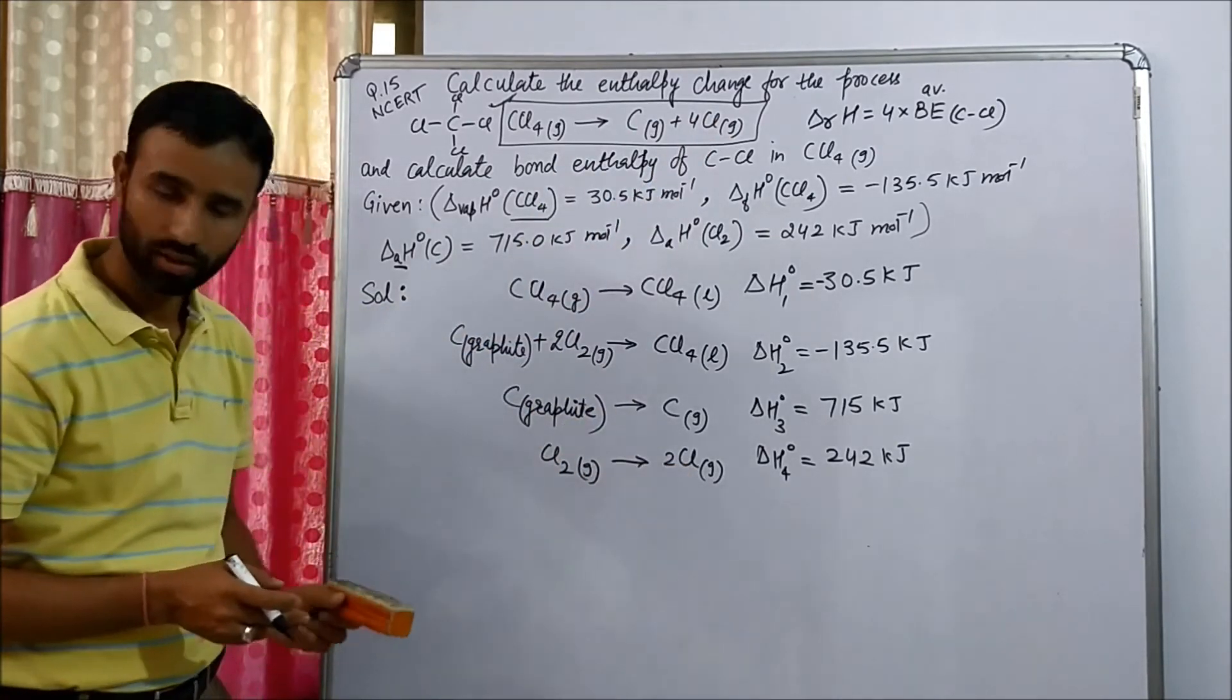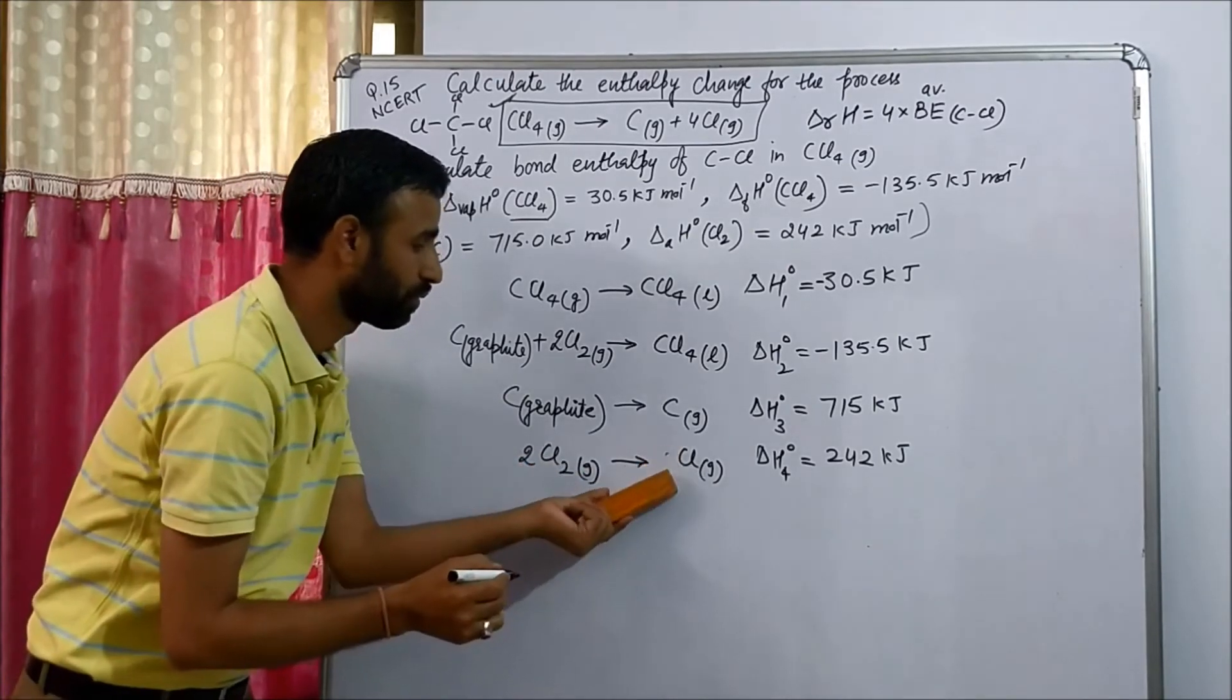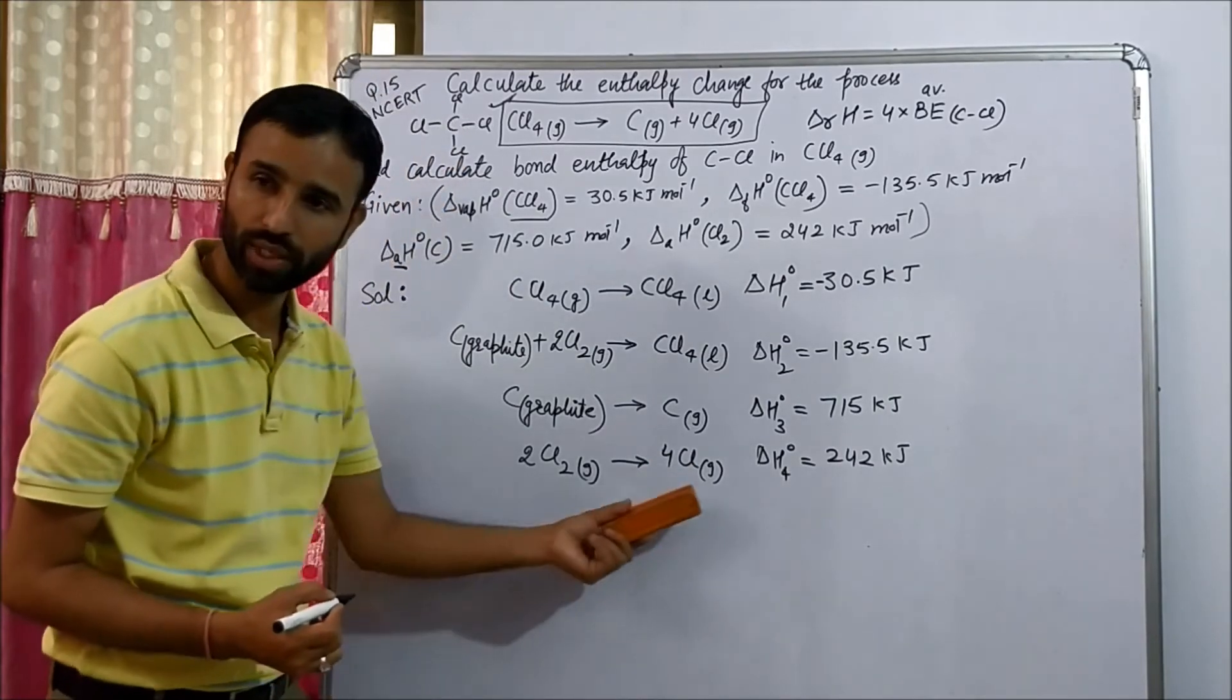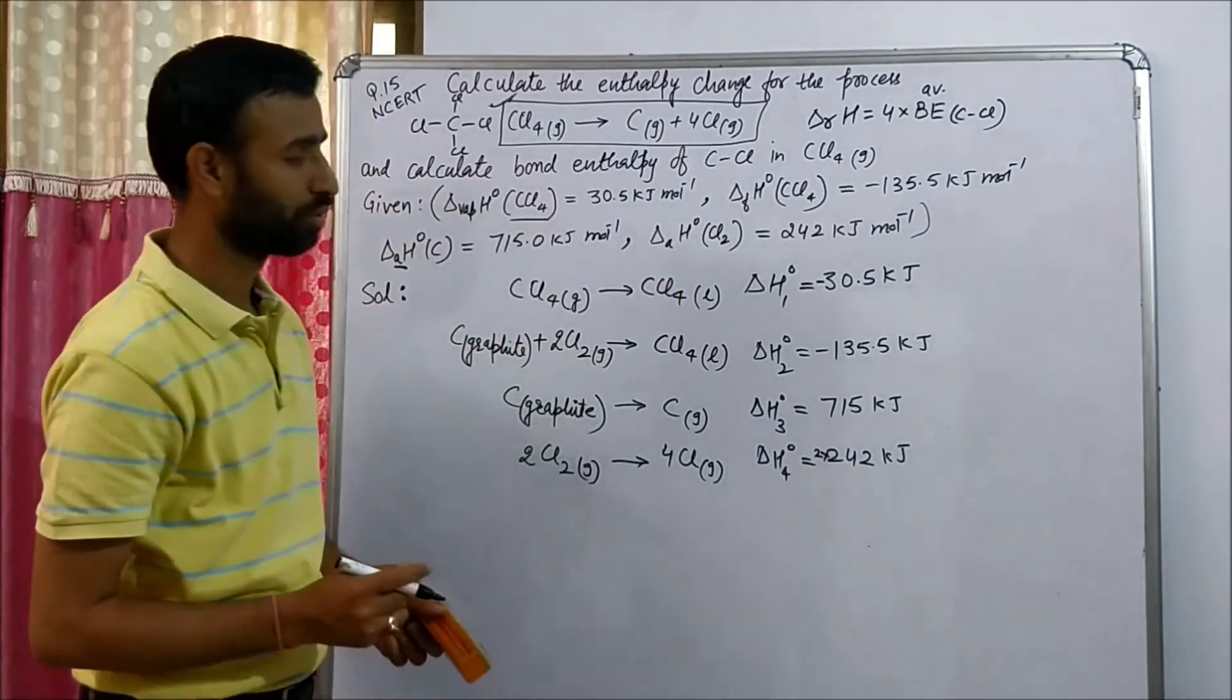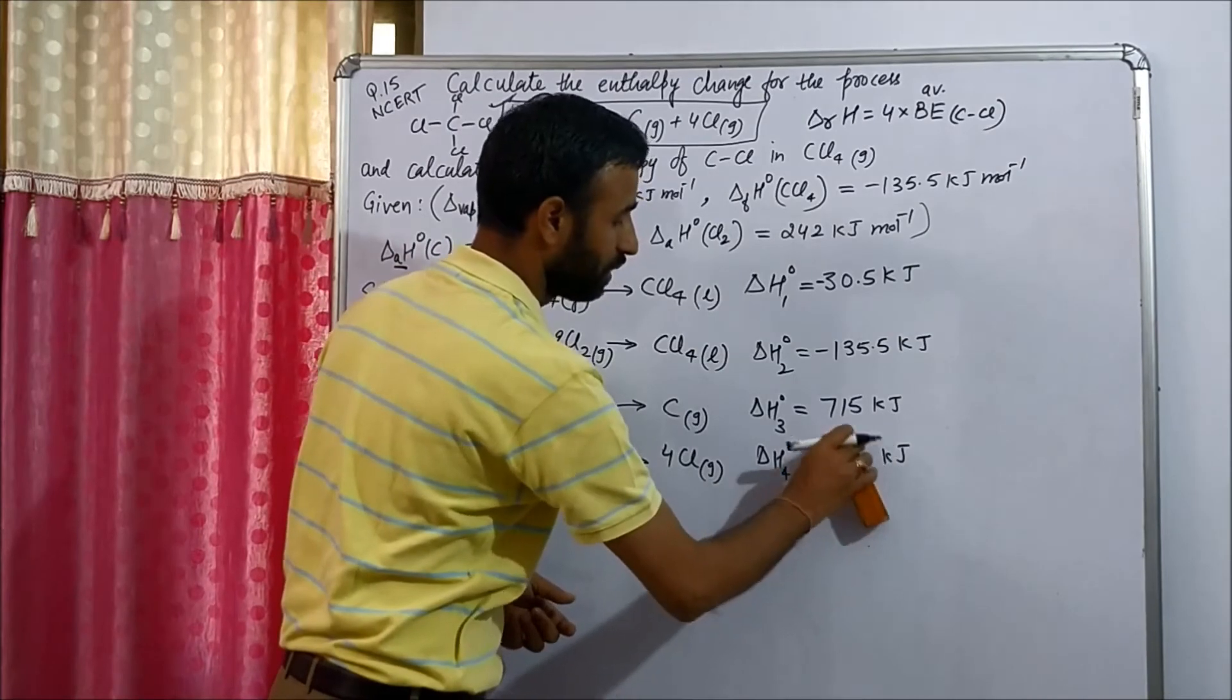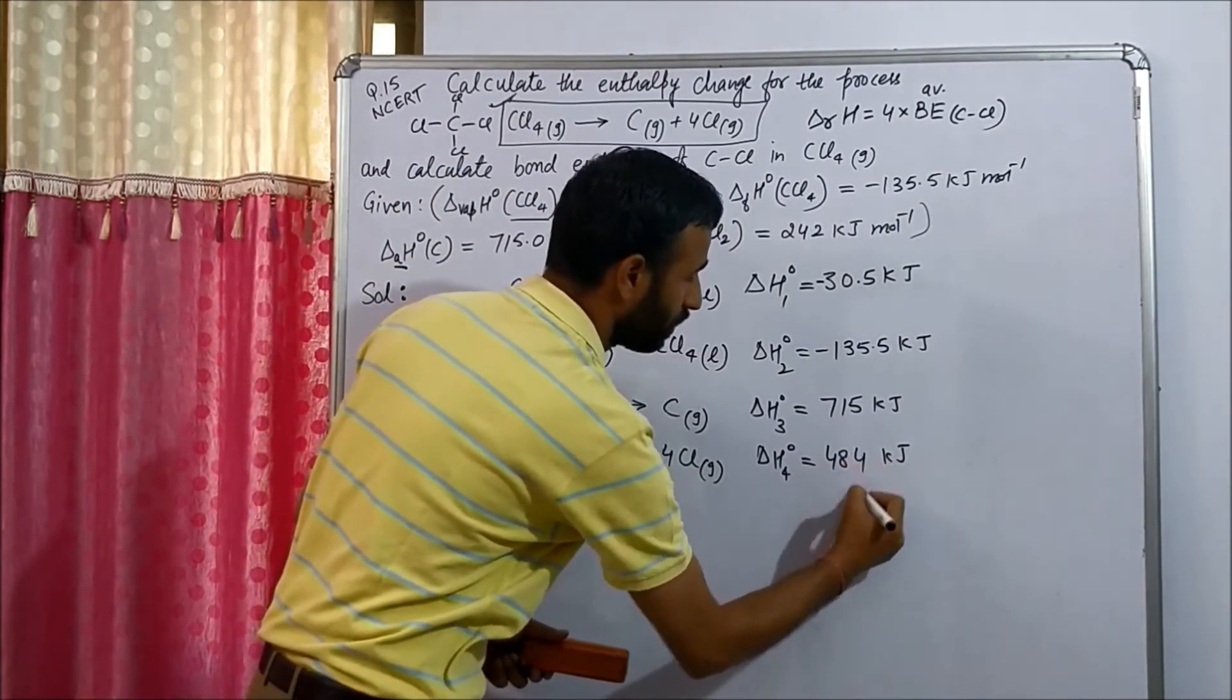Four Cl gas on right side. Two Cl, so we multiply this equation by two. So same operation we have to perform on enthalpy. So it is two times 242 or we can write directly 484 kilojoules.